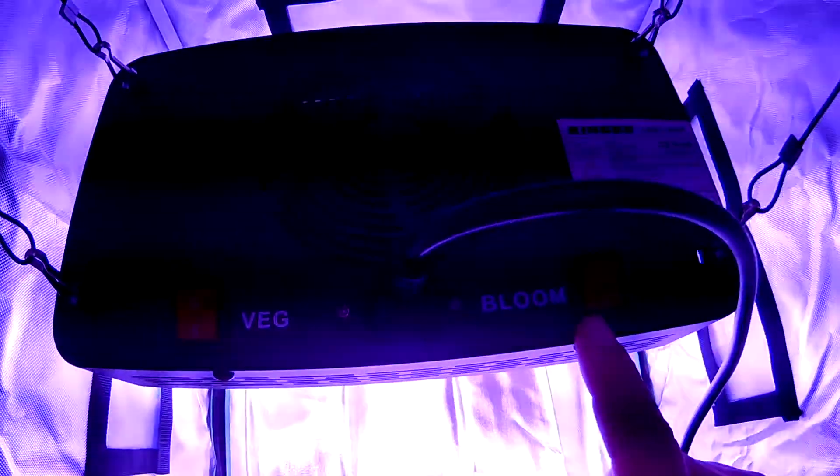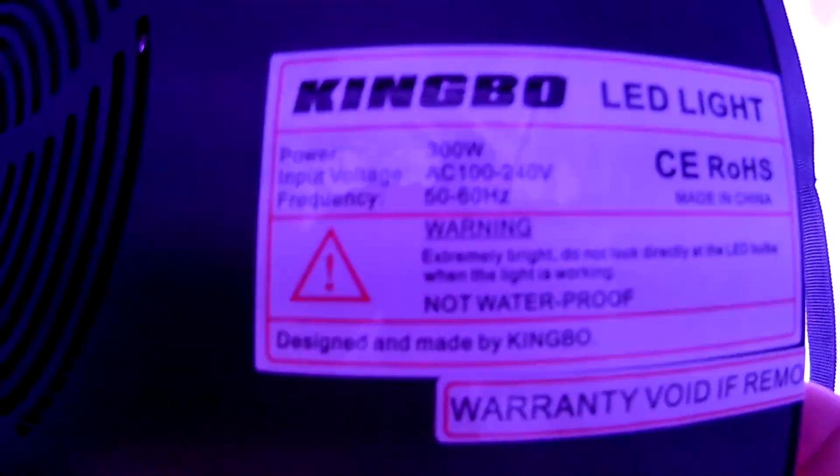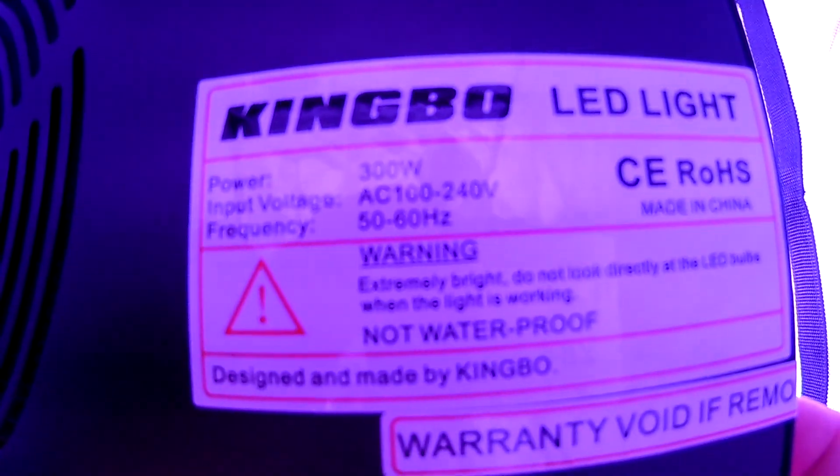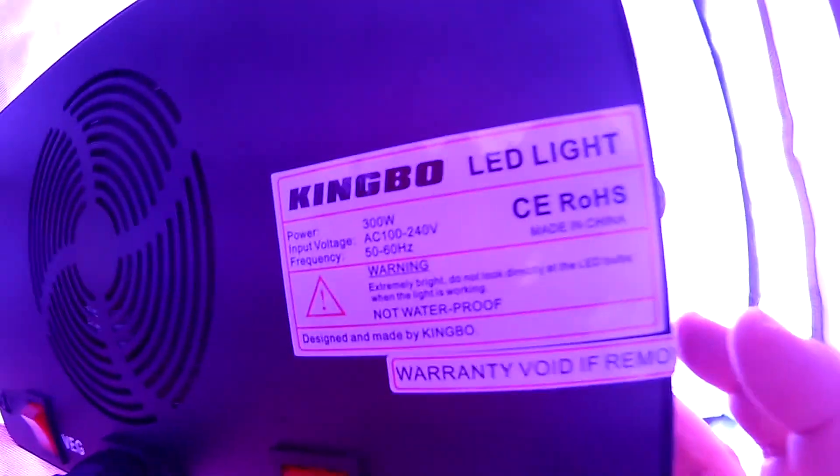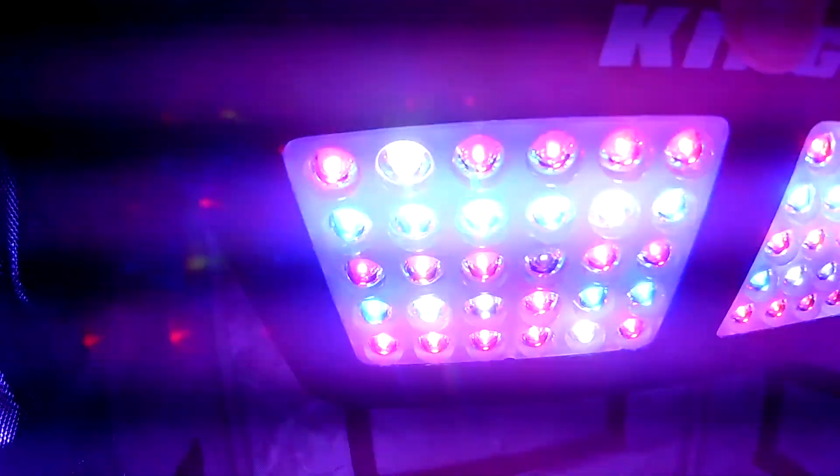keep this unit cool. You have a veg switch and a bloom switch. Light information - void if tampered or if tag removed for the warranty. Let's see if we can see the lights, you can kind of see